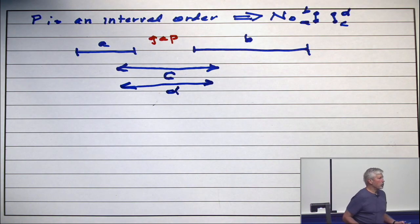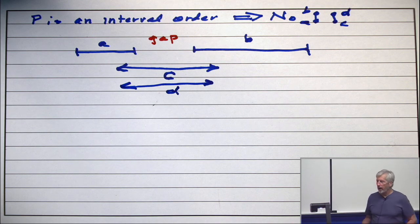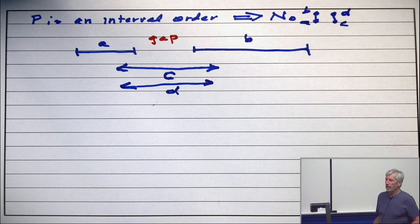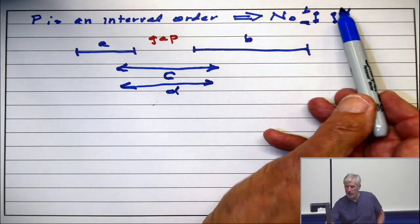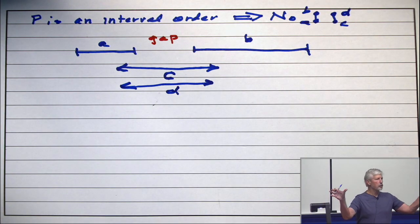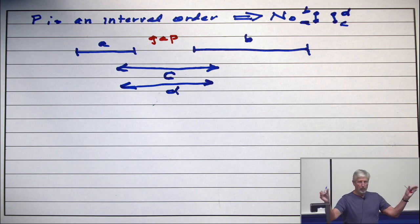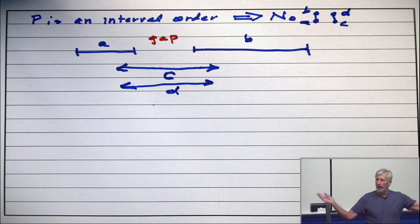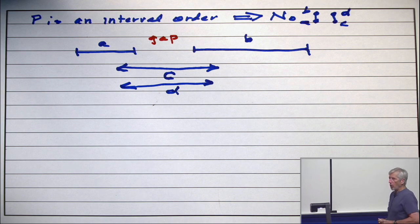Now, with those two statements together, you cannot have C less than D. Because C less than D means the intervals for C and D are disjoint, with C ending before D begins. And we've just shown that, in fact, C and D overlap. They both contain the gap. So that is the proof of necessity.